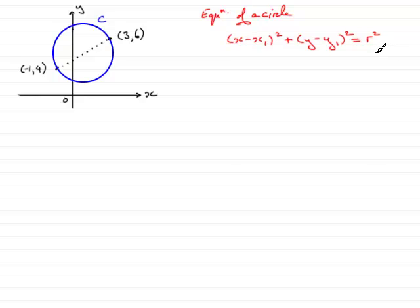Well, the centre of the circle, let's just mark it in. It's going to be there-ish. Now to get that point, this is the midpoint of the diameter. So let's start by saying that the centre of circle is going to equal...